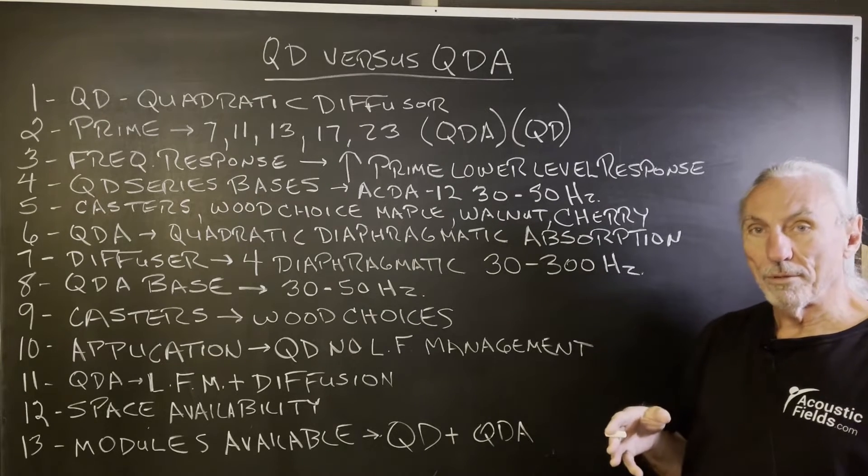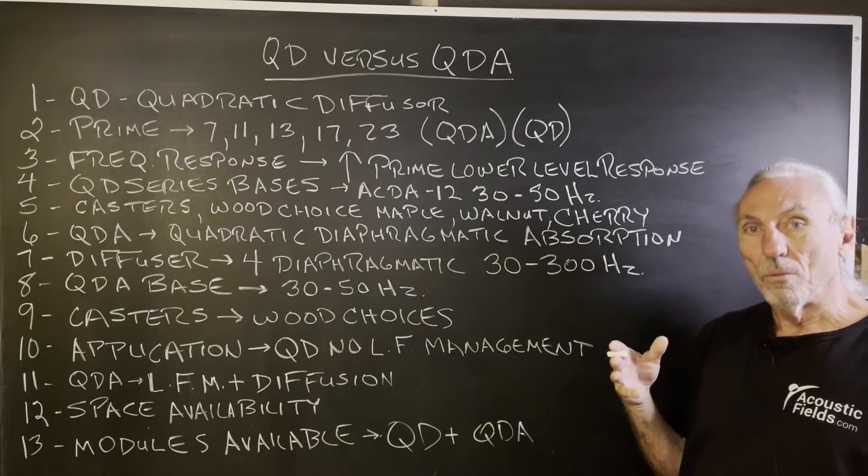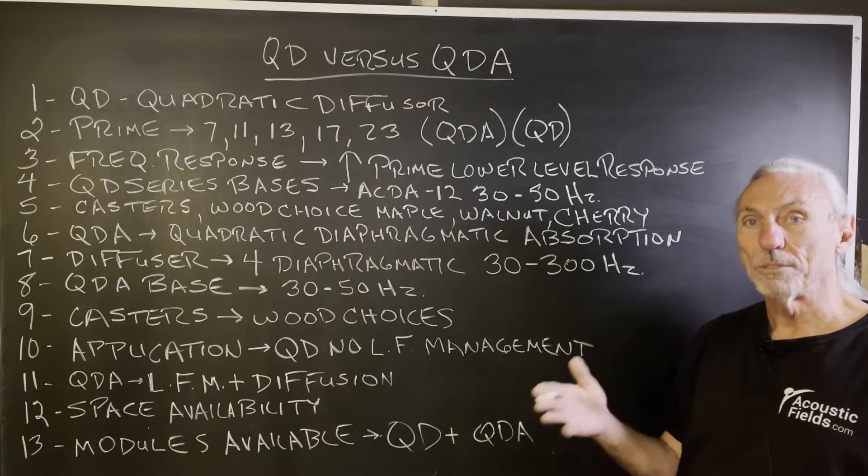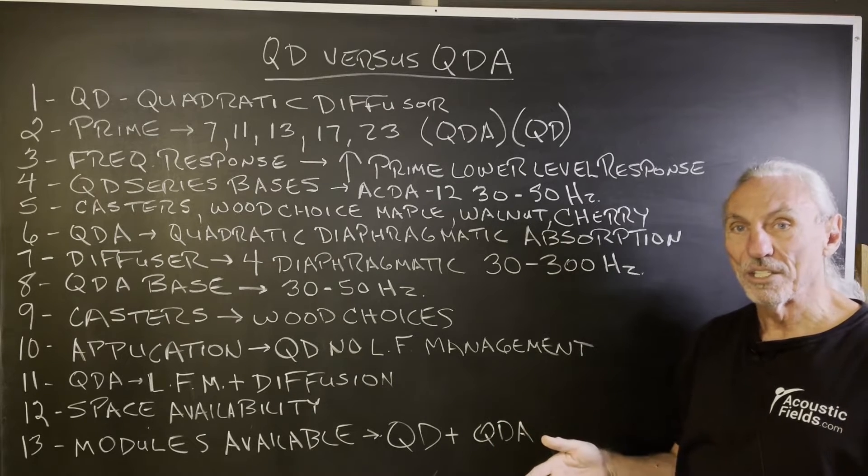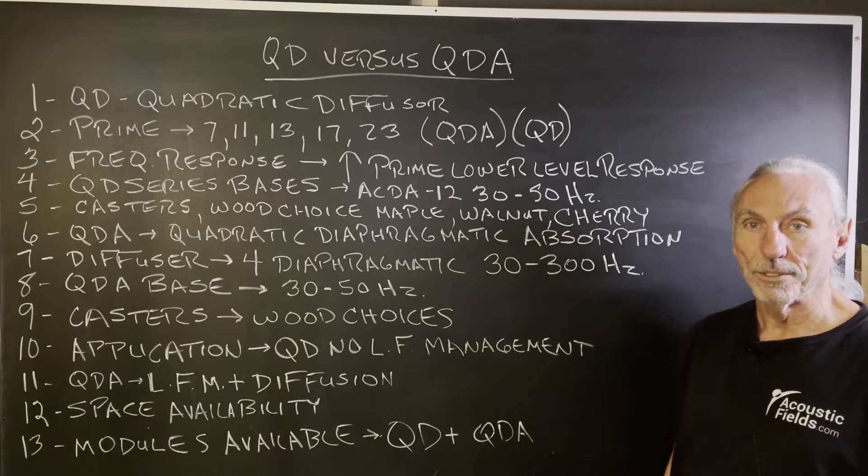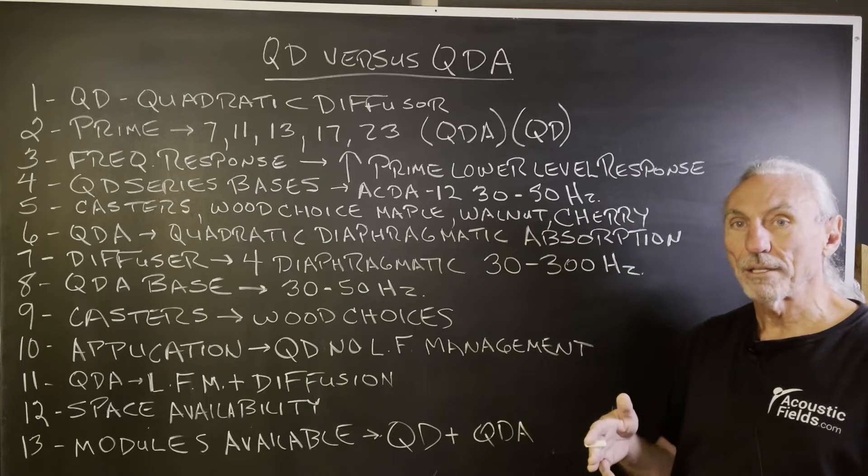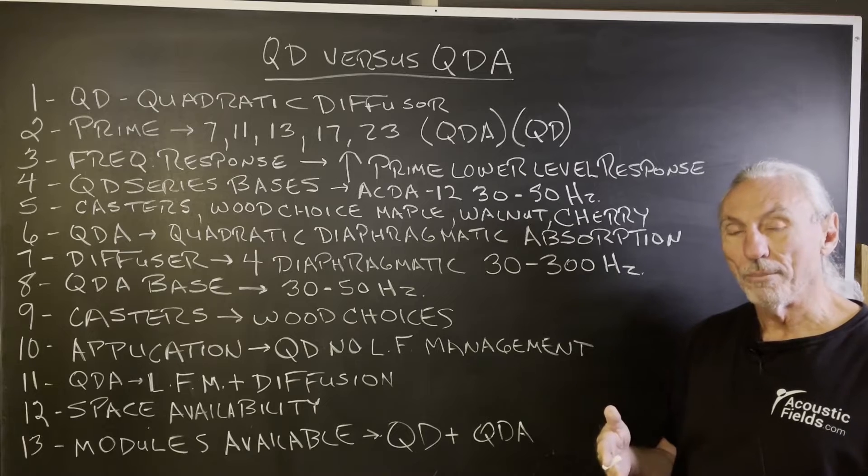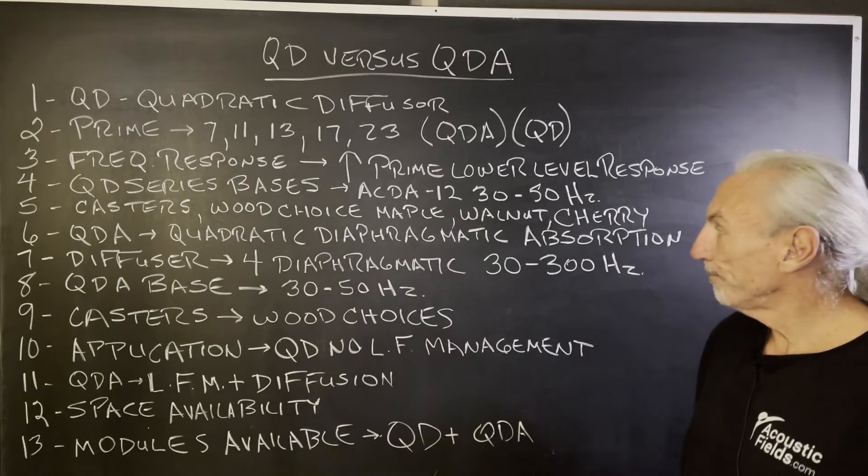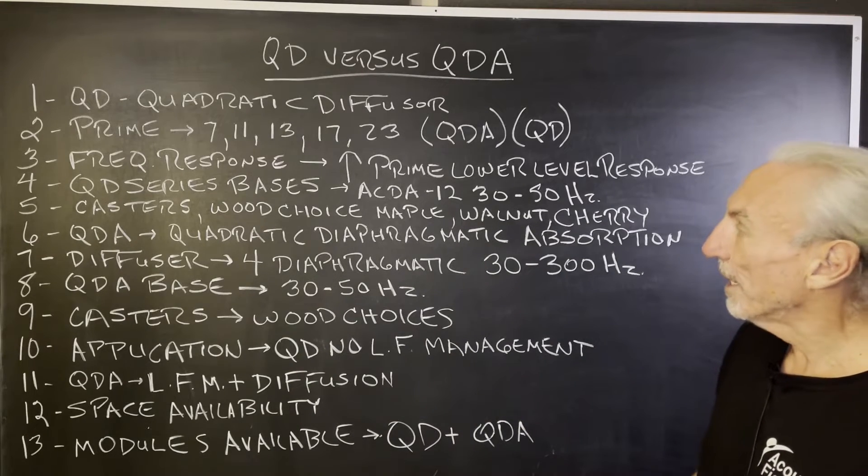But remember from past videos that what prime number you use is based on usage and distance from the diffuser to your ears, because we're trying to create enough distance for the lowest octave band of the diffuser to fully form. So we need distance for that. We can help you calculate that.